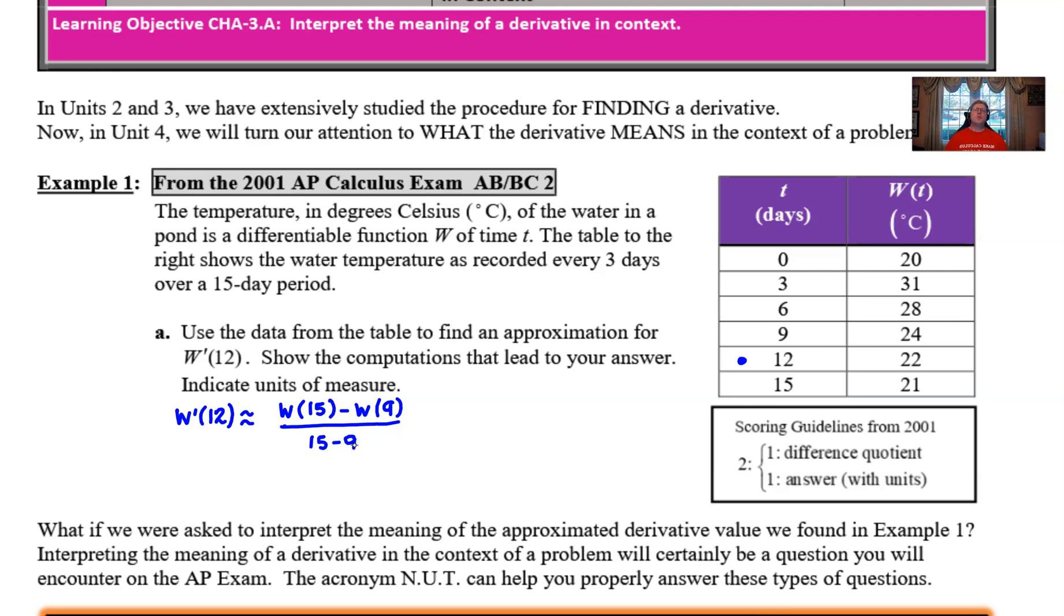Now that would certainly work. That would not be a problem. We could do this calculation by looking at our table. The W of 15 value is 21. The W of 9 value is 24. And then, of course, 15 minus 9 we know is 6. And then once we simplify this further, we can reduce it as much or as little as we want. And reducing it all the way would give us the negative one half.